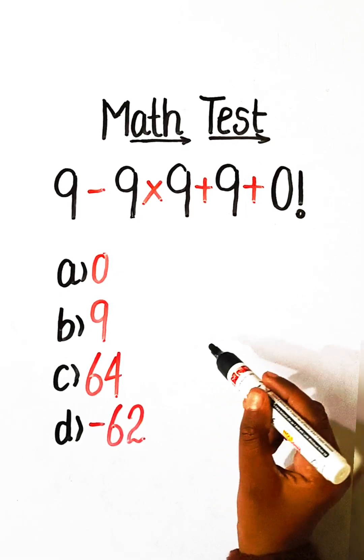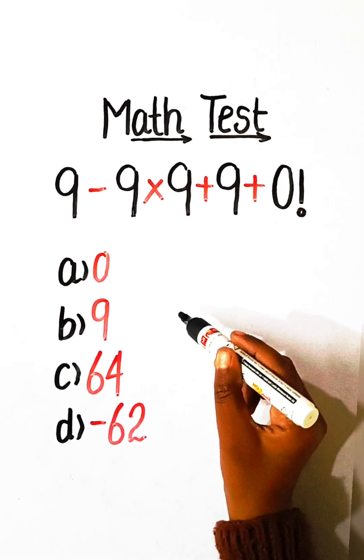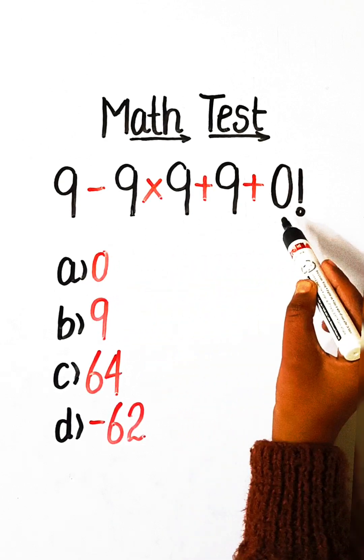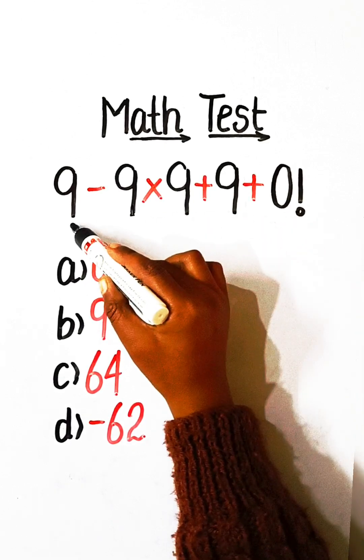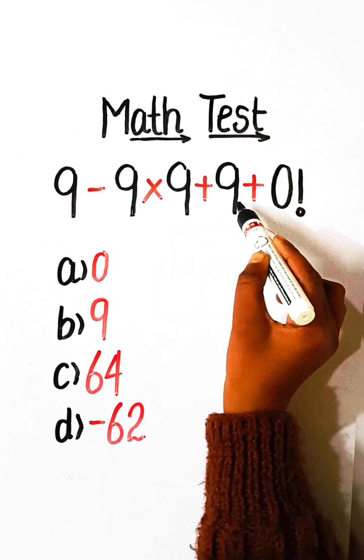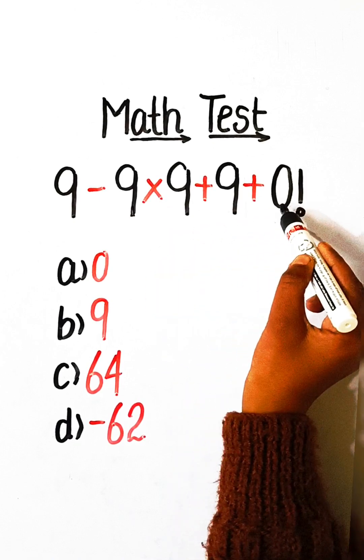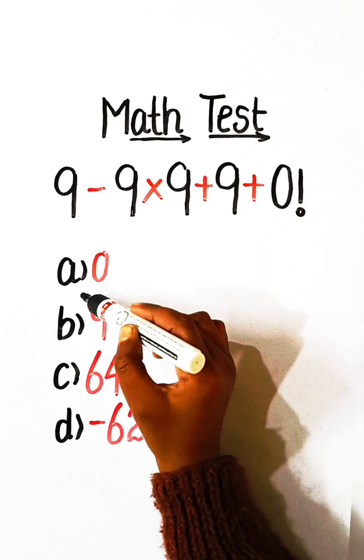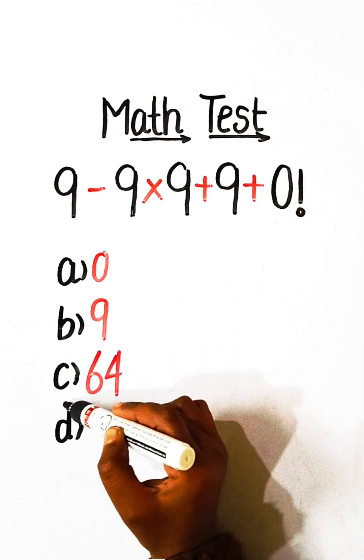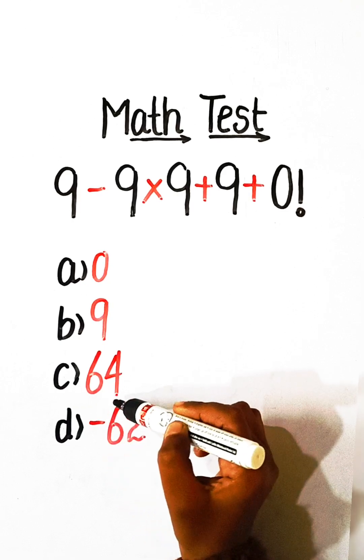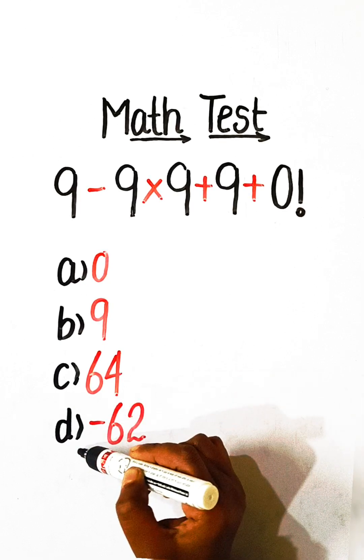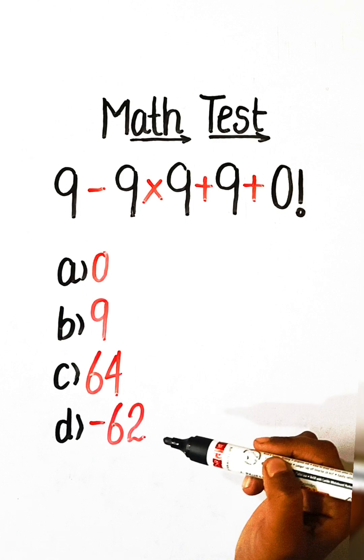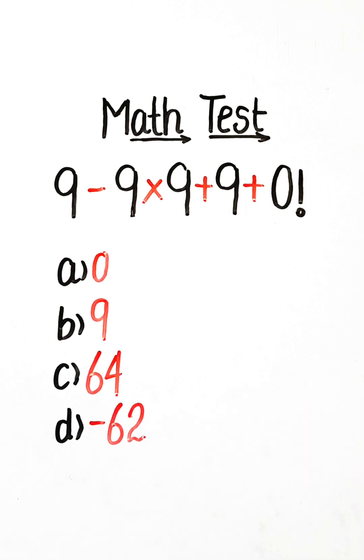Hello everyone, welcome to my YouTube channel. In this video we will solve this simplification equation: 9 minus 9 multiply by 9 plus 9 plus 0 factorial equals to what? Option a: 0, option b: 9, option c: 64, or option d: minus 62. So let's solve this.